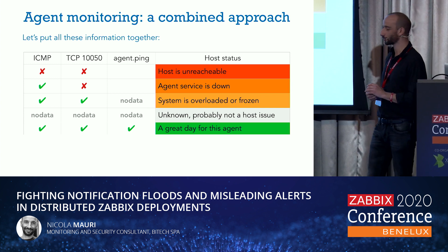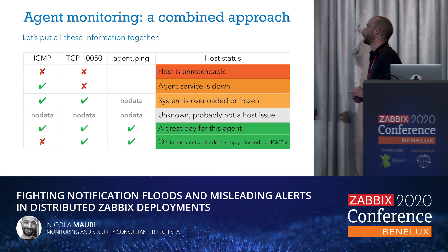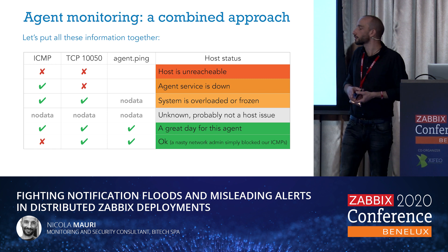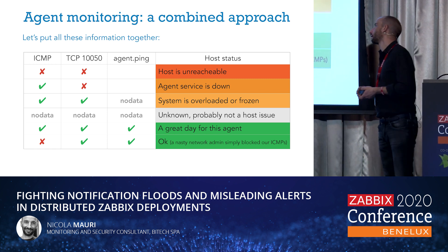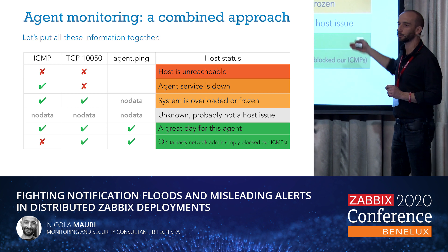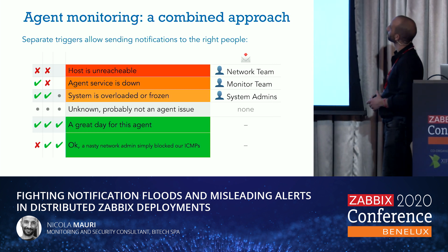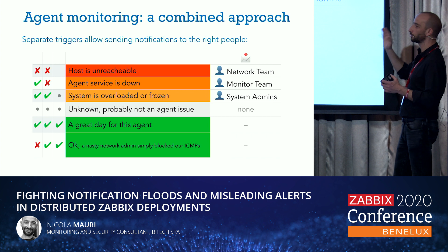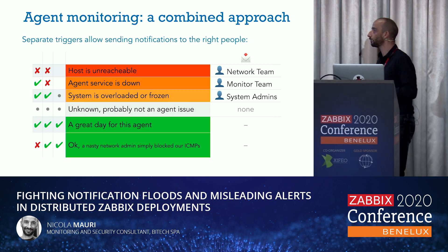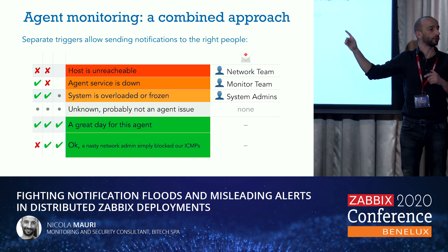Also note that if ping is down but we can connect to the TCP agent port, that's quite enough — the host is up. This is the slot machine template, and having separate triggers allows us to send notifications to the right team — for example, the networking team, the monitoring team, or the system administrator. Please have a look at the gray row, because that situation was the one triggering the notification flood. Now we are not going to notify anyone.